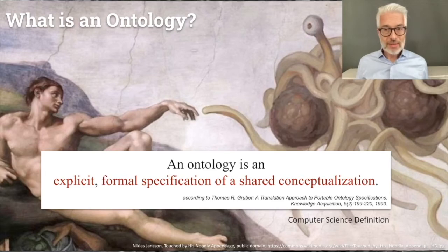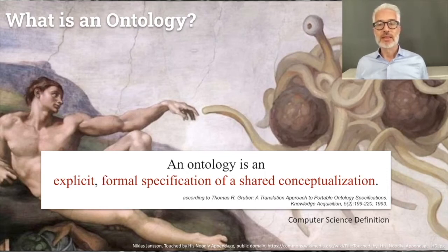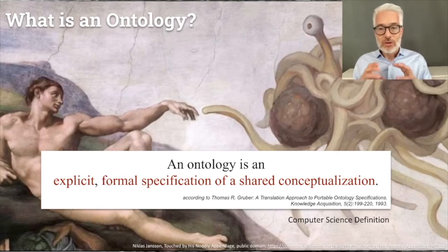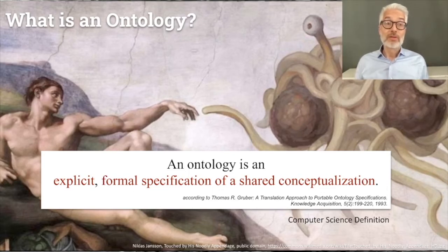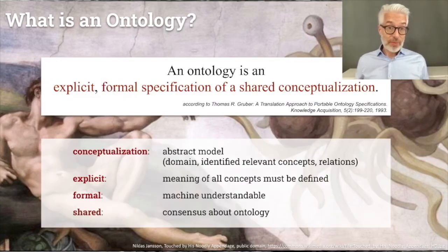Since the mid-1970s, researchers in AI recognized that knowledge engineering is the key to building large and powerful AI systems, and started creating ontologies as computational models for automated reasoning. In the 1980s the AI community began using the term ontology to refer to both a theory of a modelled world and a component of a knowledge-based system. The term was first used in AI in 1983 by David Powers. The concise definition of an ontology in computer science is from Thomas Gruber in 1993: ontology is an explicit formal specification of a shared conceptualization.